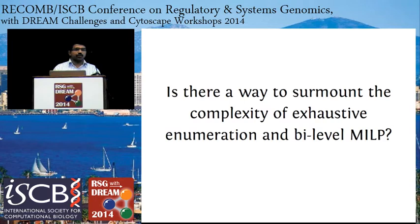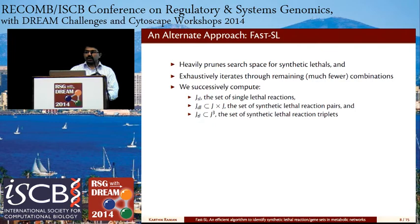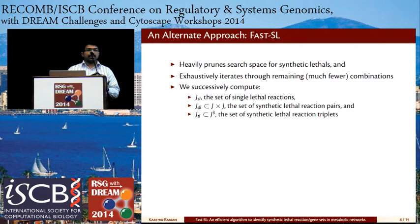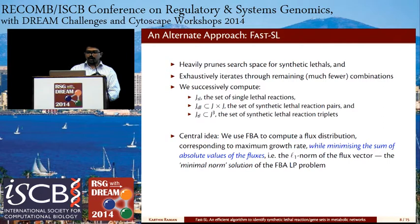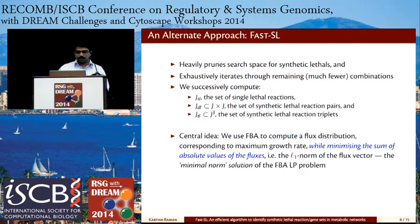The question we are asking is: is there a way to surmount the complexity of either brute force enumeration or the bi-level MILP through a different method? That is what we seek to do with a method called FAST SL — SL stands for synthetic lethals. We extensively prune the search space for synthetic lethals and then exhaustively iterate through the remaining much fewer combinations. We successively compute JSL (single lethal reactions), double lethal reaction pairs, and triple lethal reaction triples. The key idea is using FBA to compute a sparse flux distribution — minimizing the L1 norm of the flux vector — corresponding to maximum growth rate.